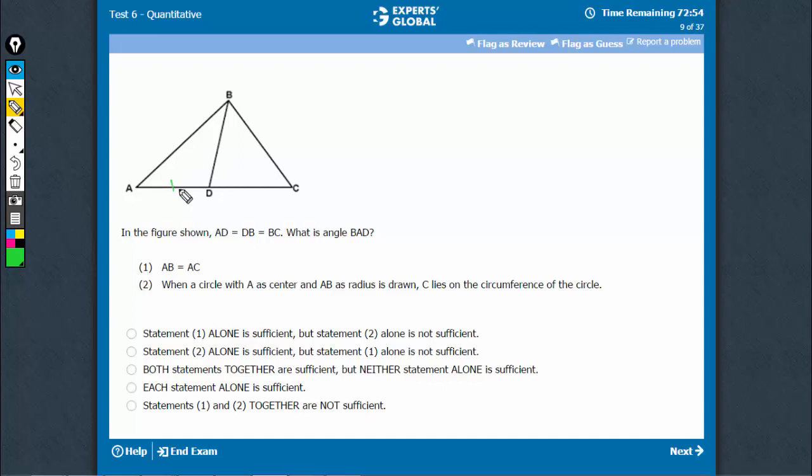The question says AD is equal to DB is equal to BC. This is given in the question. The question is asking this angle. Now, statement 1 says AB is equal to AC. Now, let's try solving this question.